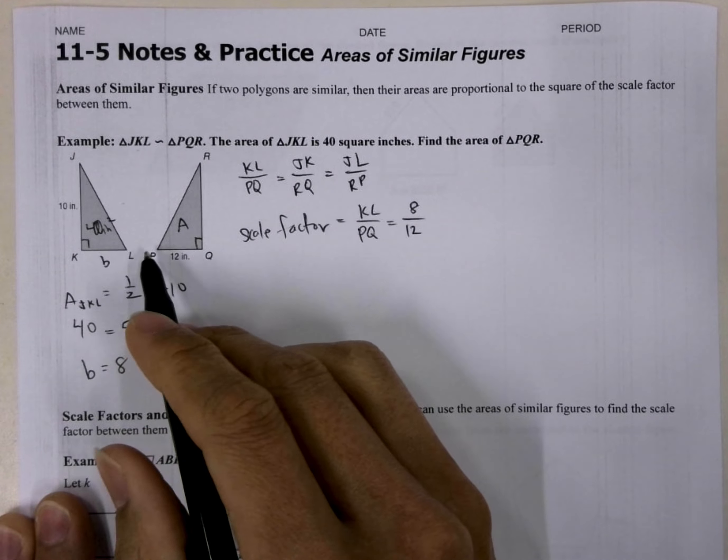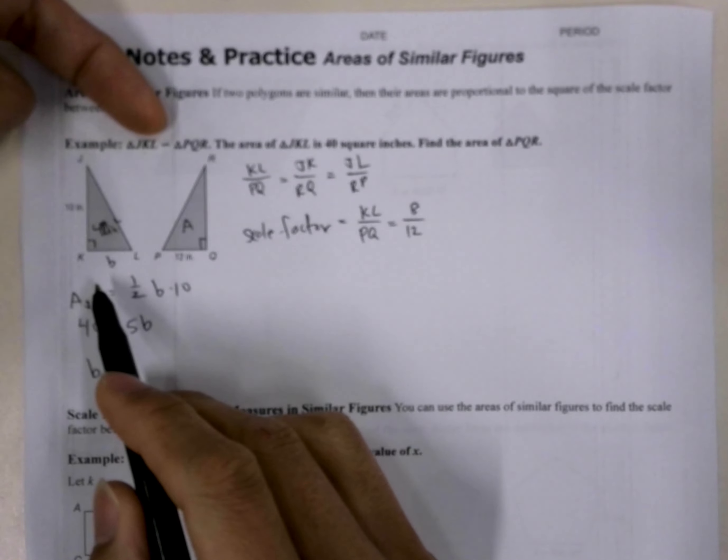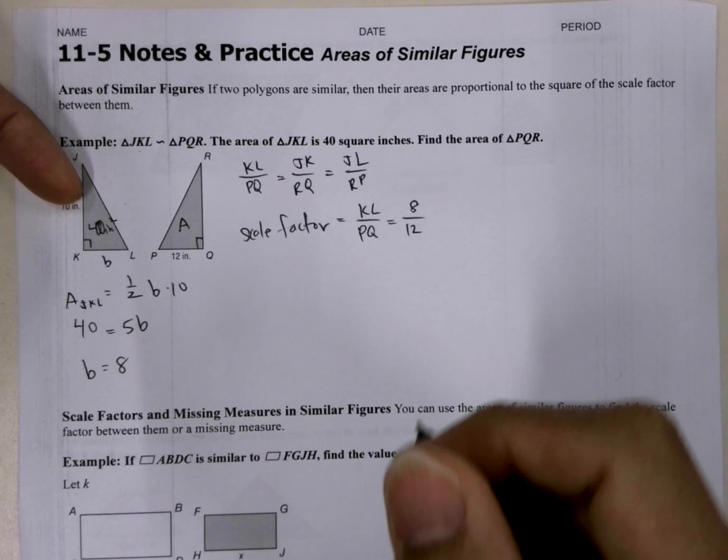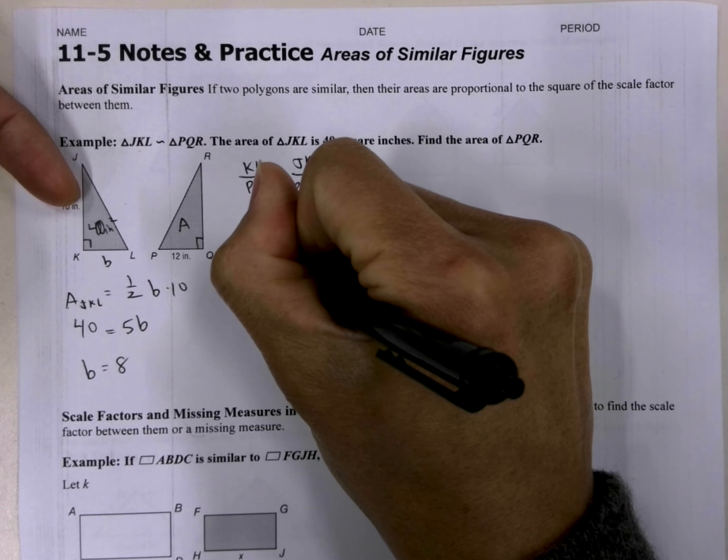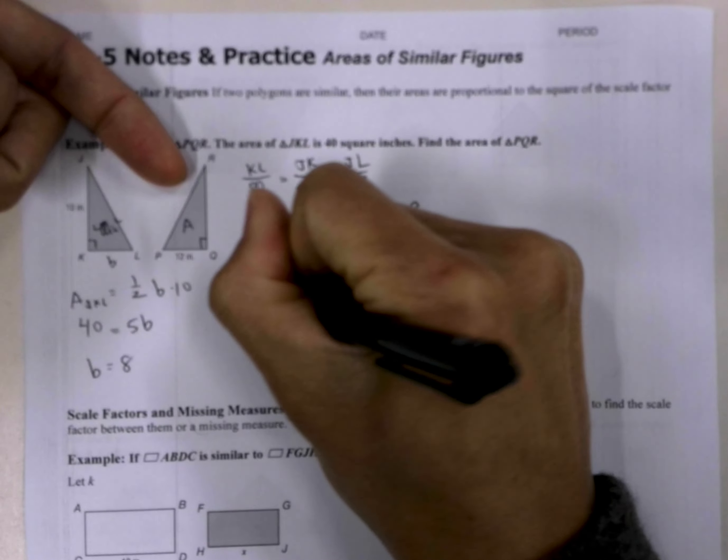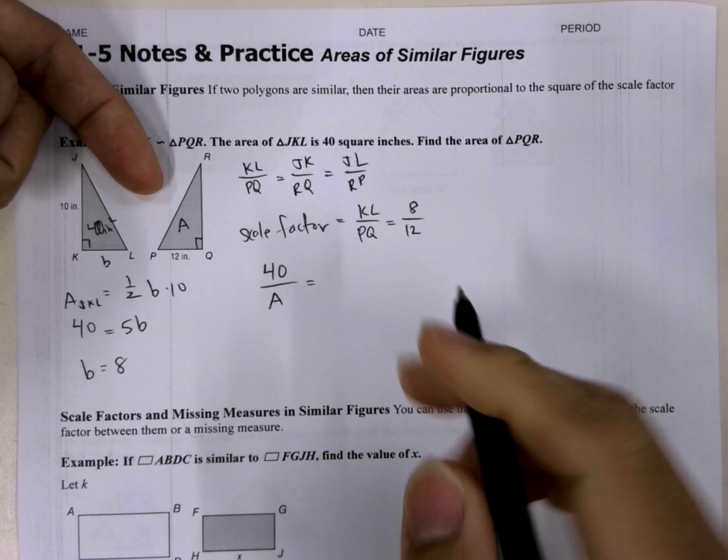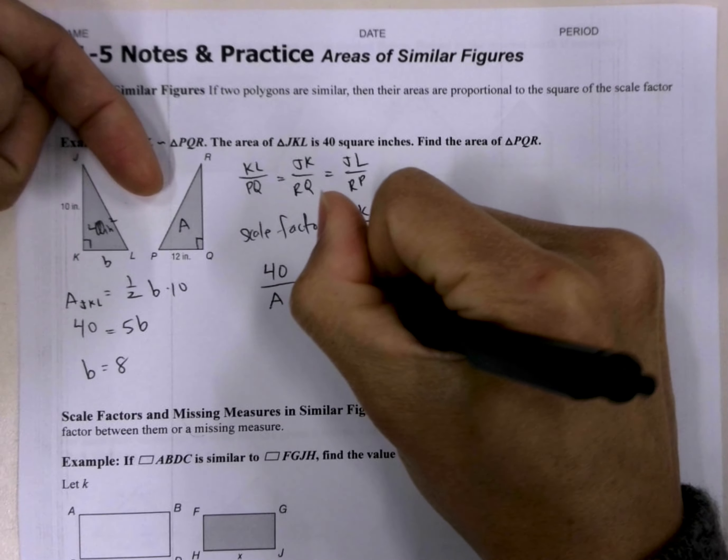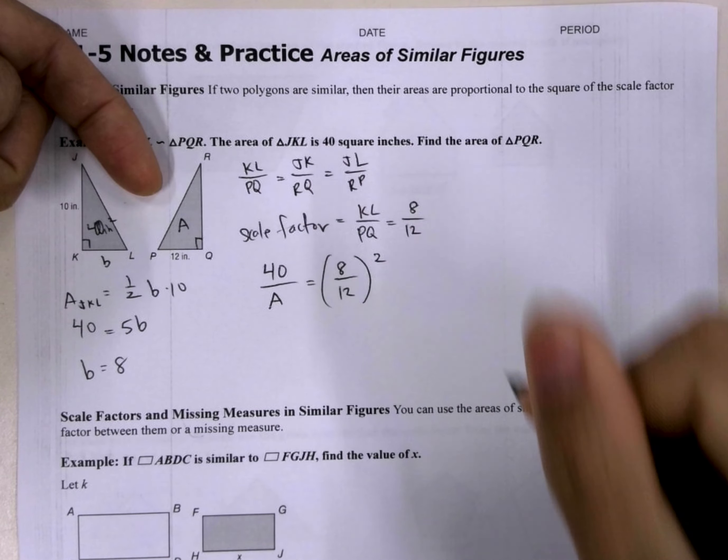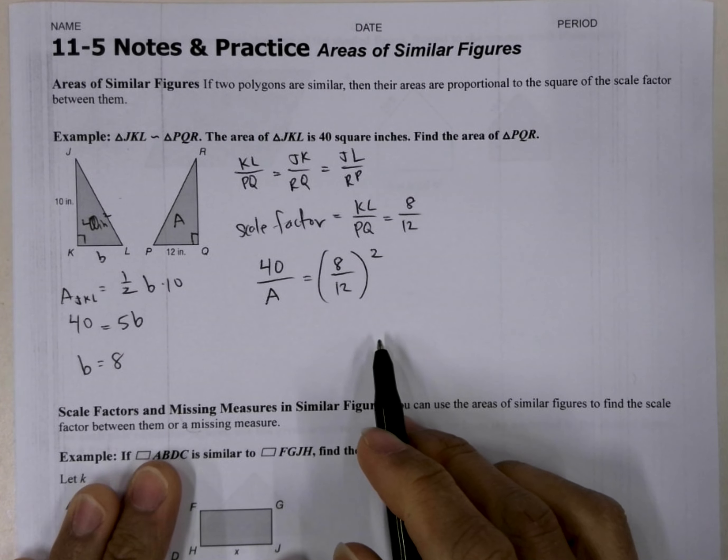So what does that all mean? That means we're going to do JKL's first is similar to PQR. So we're going to do JKL's area is 40 over PQR's area, which we don't know is A, is equal to, is proportional to, the square of the scale factor, so the square, like so. So this is the equation that we're going to create, and now we can solve for A.